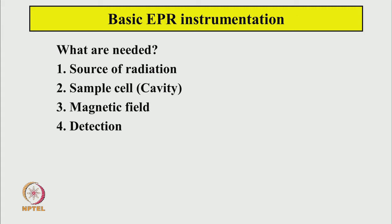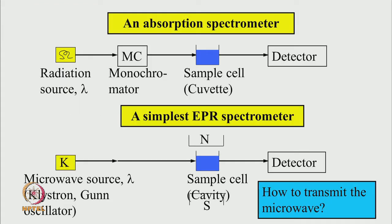The simplest possible spectrometer looks like a normal absorption spectrometer — as in ultraviolet-visible or infrared spectroscopy — where there is a source of radiation, a monochromator which chooses a particular frequency, a sample cell (normally called a cuvette), and a detector. Whenever radiation is absorbed by the sample at a given wavelength, that change in the signal seen by the detector is in a sense the spectrum. In the same spirit, the simplest EPR spectrometer has a source of microwave radiation, a sample cavity kept in a magnetic field, and a detector for transmitted radiation.